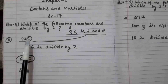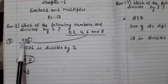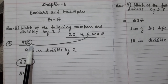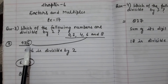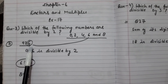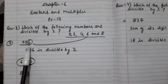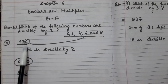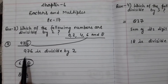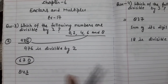So, I will take an example of 976. The unit digit of 976 is 6. When the unit digit is 6, the number is divisible by 2. So, 976 is divisible by 2.